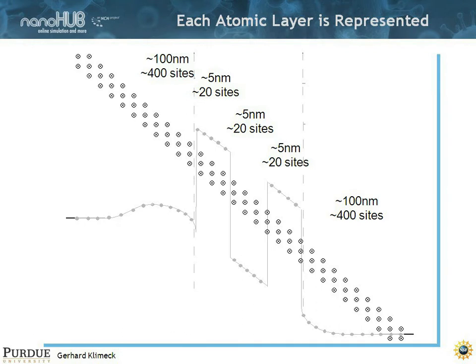There's about a hundred nanometers or more here in the emitter. So that's like 400 numerical sites. Then you have about 5 nanometer barriers, 5 nanometer well, and another 5 nanometer barrier. That's some 60 sites. And then on the right you have again 100 nanometers ballpark, that's 400 sites. That means, in terms of computational load, the contacts are far larger than the central region.